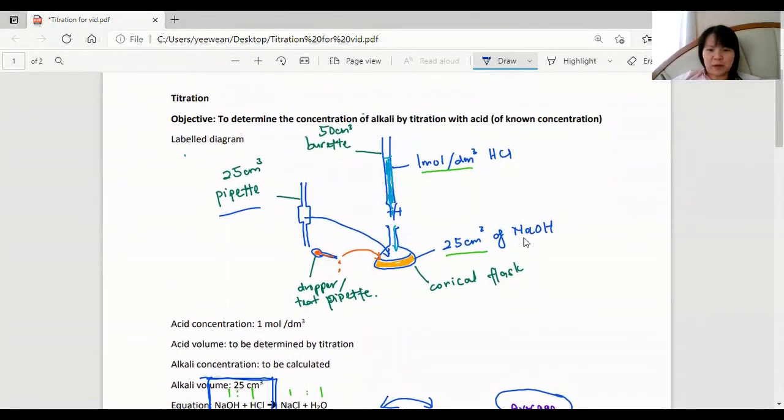Okay, if our purpose is to prepare NaCl, a salt, then we would repeat the whole experiment here without the indicator. So if we've done this experiment with the indicator, then the salt will be contaminated with this methyl orange.